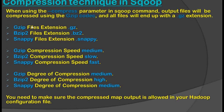When using the double hyphen compressed parameter in a Sqoop command, the output file will be compressed using the gzip codec and all files will end up with a dot gz extension. When we use bzip2 compression technique, the output file extension will be dot bzip2. When we use snappy compression technique, the file extension will be dot snappy.